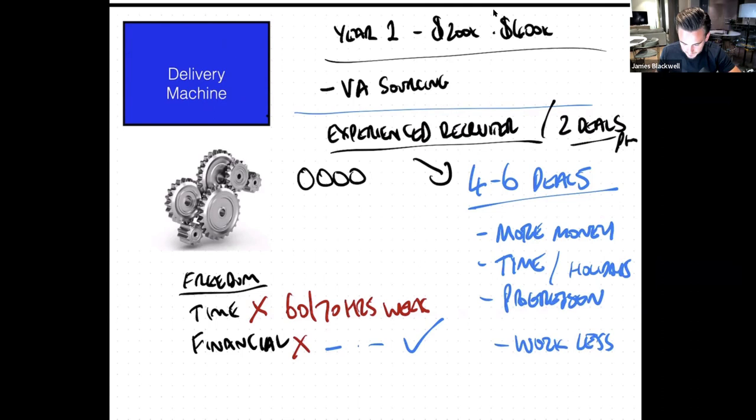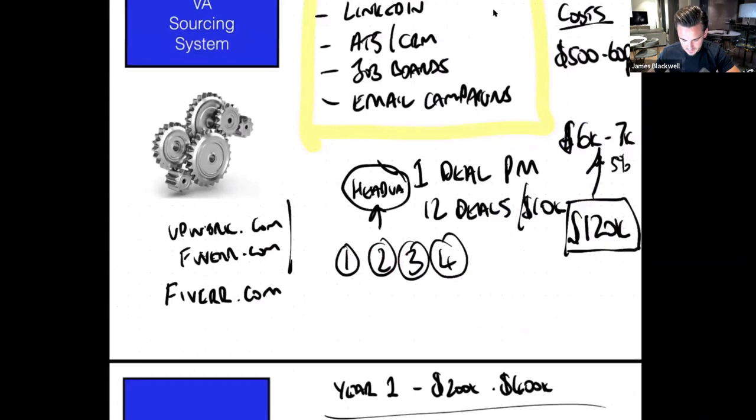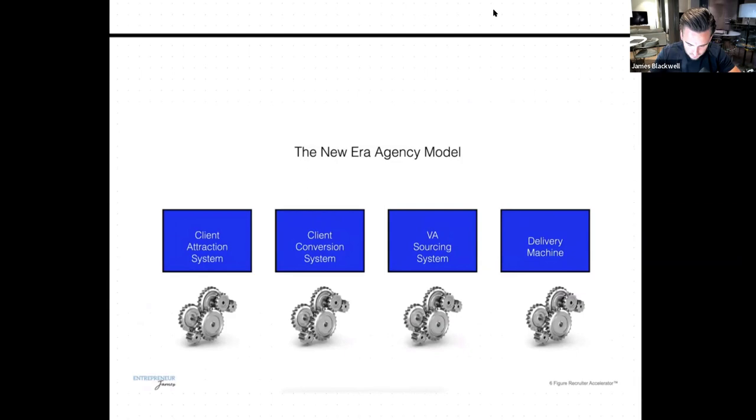So you're going to get more jobs inbound and they're going to get candidates inbound. And then they're going to make more commission, which in turn makes them more money. And that's going to free you up from delivery. So then you can work on the business and start really nailing down this new era agency model.